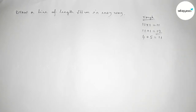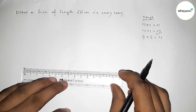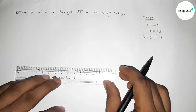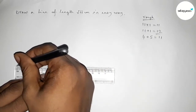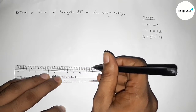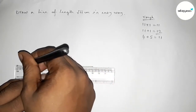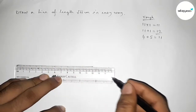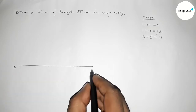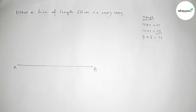I'm going to draw here a line of length 12 centimeter using a scale. This is the 12 centimeter line. Taking point A here and point B here, so AB equals to 12 centimeter.